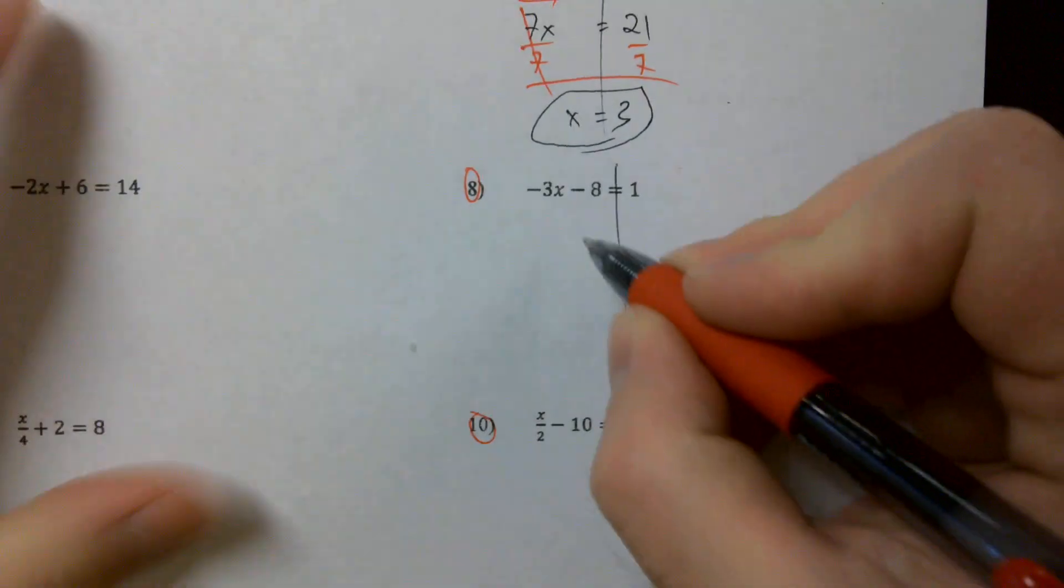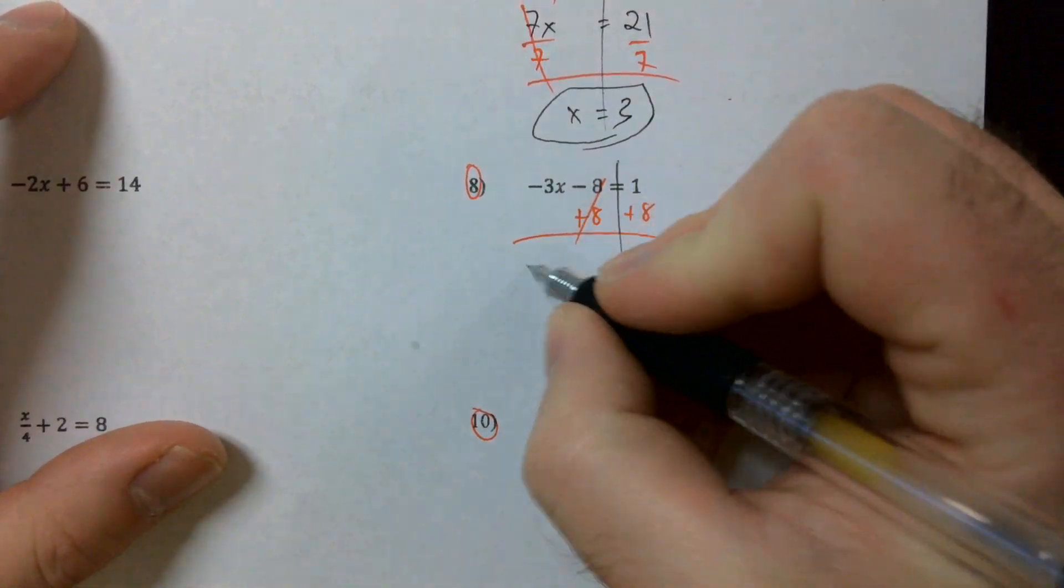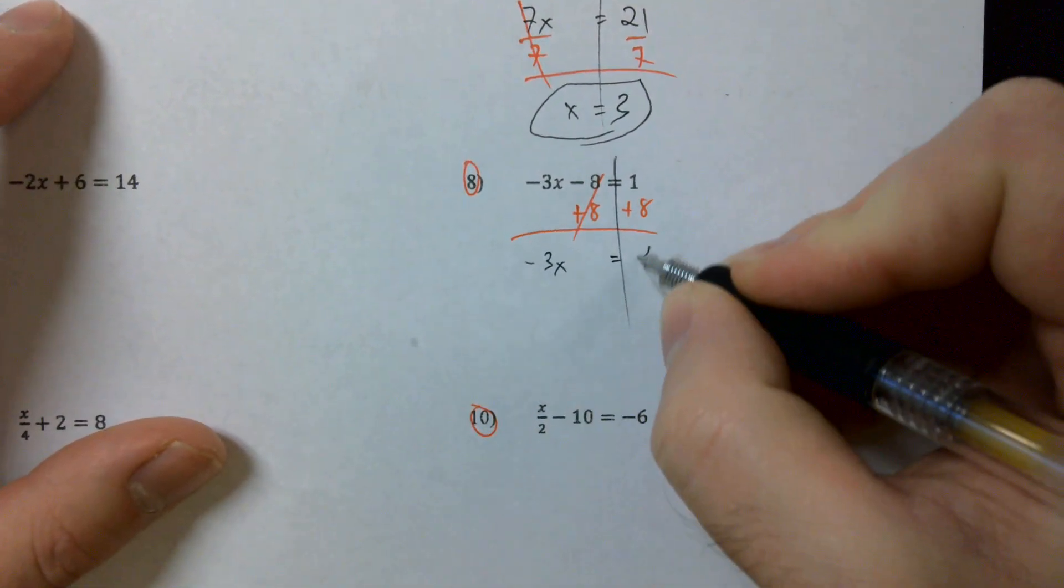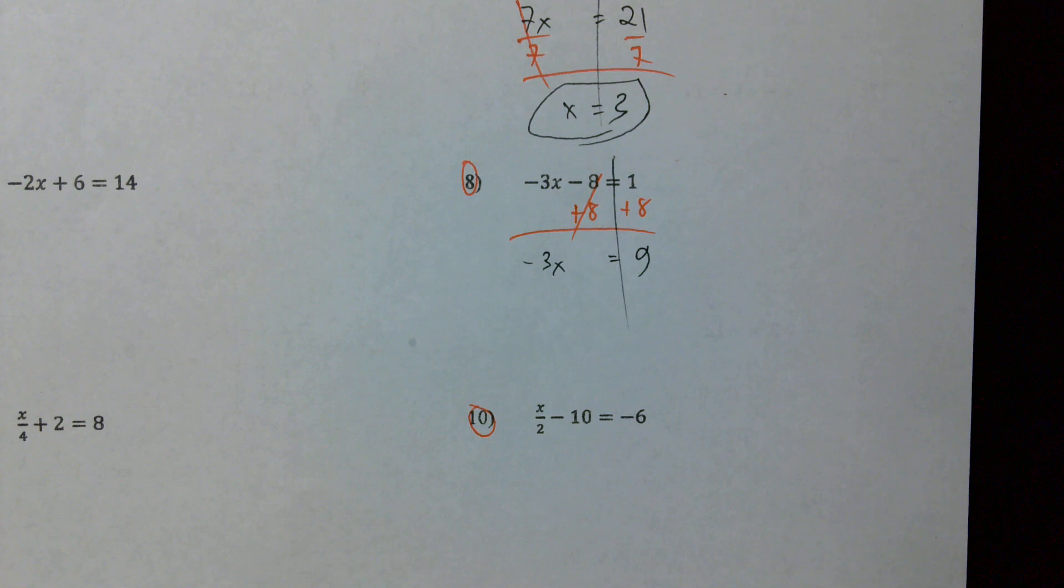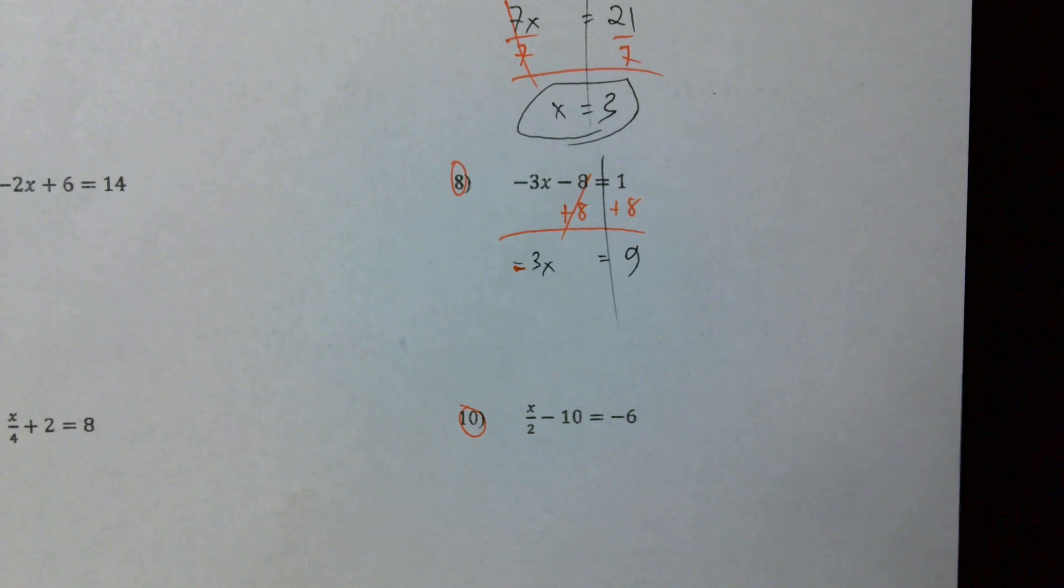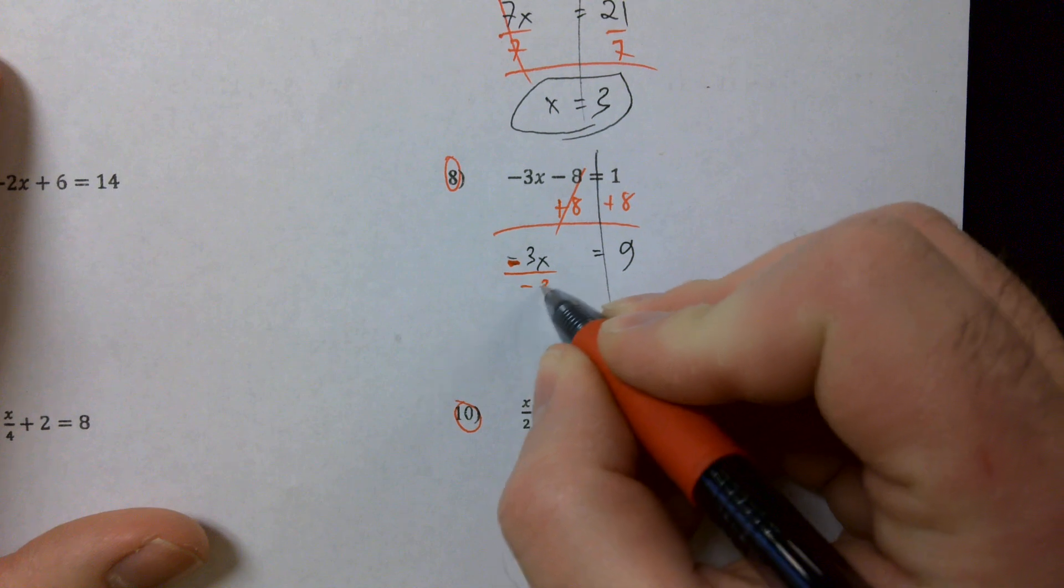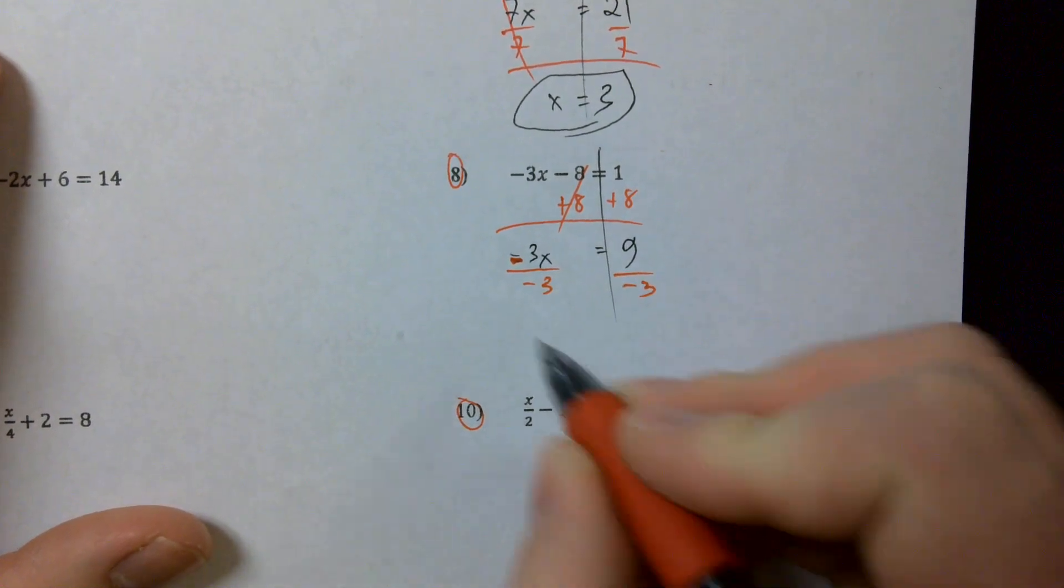All right, number eight. What do I want to do first? Plus eight. That's right. Negative three x equals nine. And now I'm going to divide again. Remember we see that negative three and a lot of times our brain goes oh I'm going to add three now, but that's not what we're doing because we're multiplying negative three by x, we're going to divide by negative three.